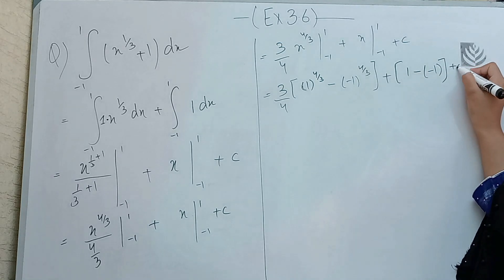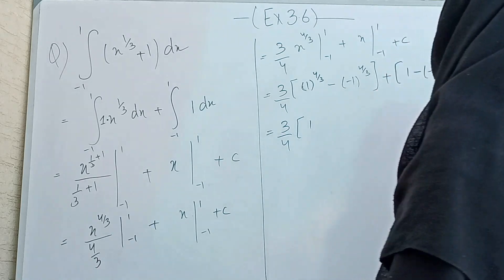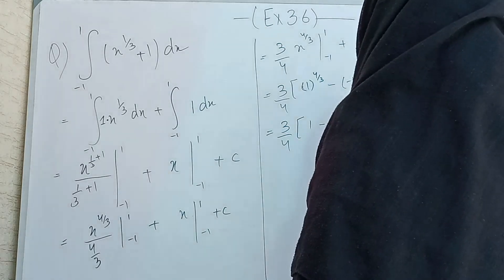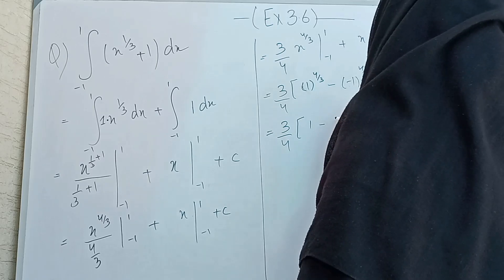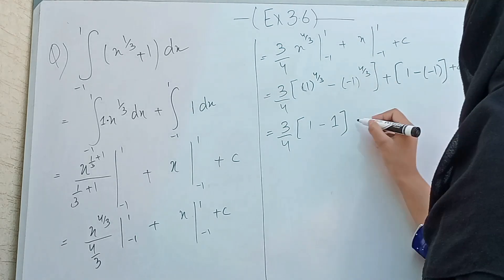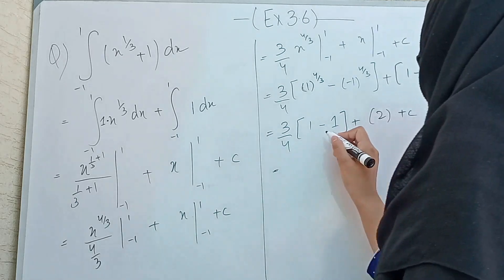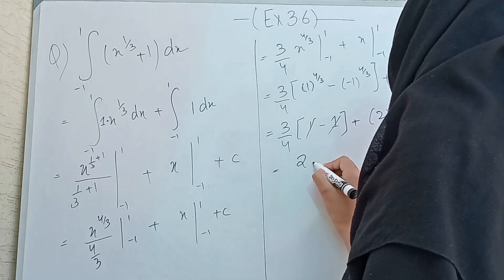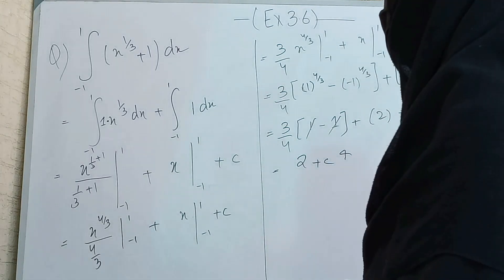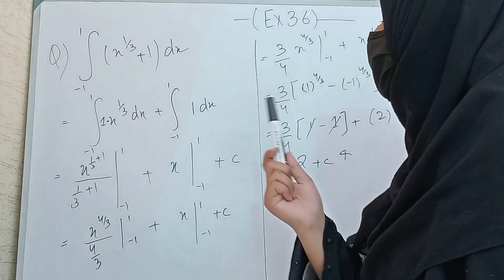Evaluating: (3/4)[(1)^(4/3) − (−1)^(4/3)] + [1 − (−1)]. Since both give the value 1 for the power term, they cancel to 0, and the remaining terms give 2, so the required answer is 2. In all definite integrals, first solve the integration, then substitute the limits a and b.